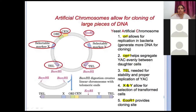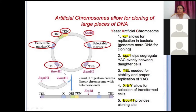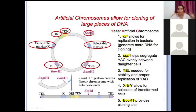The origin of replication will be present. The centromere region helps segregate YAC evenly between daughter cells — just as in BAC you had par genes to segregate BAC into daughter cells, in YAC you have the centromere region (CEN) which helps segregate. The telomere region (TEL) is needed for stability and proper replication of YAC. X and Y are selectable markers that allow selection of transformed cells. The EcoR1 site is the cloning site where the restriction enzyme cuts and inserts foreign DNA.